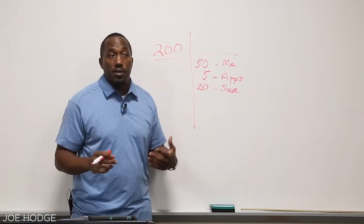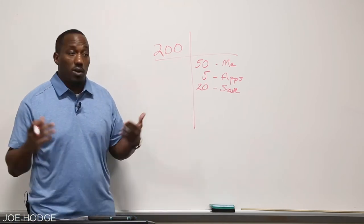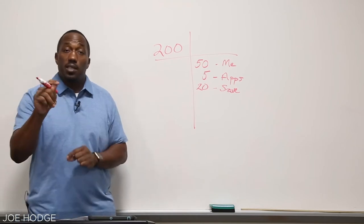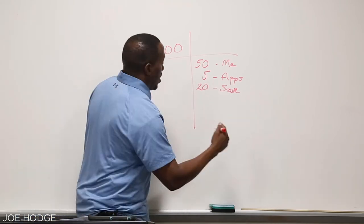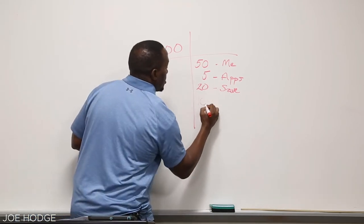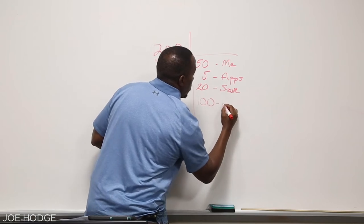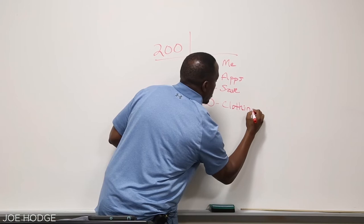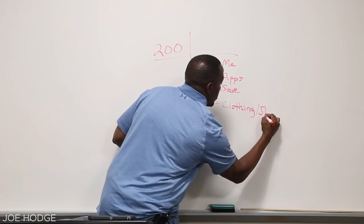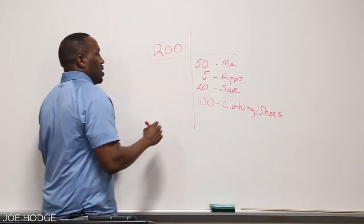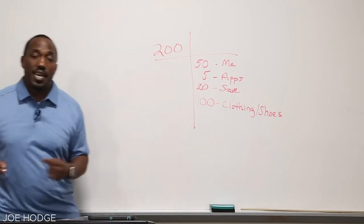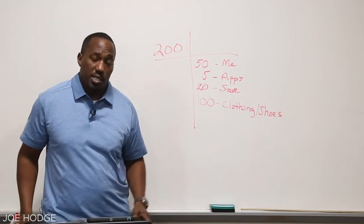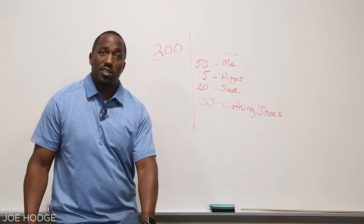So let's just say I want to go shopping. Nothing wrong with going shopping. Nothing wrong with spending your money on you. The main thing is that you budget for it. So I'm going to budget to spend $100 on clothing or shoes, whatever I see fit. Which brings us down to $175. I've got how much left? About $25 left.